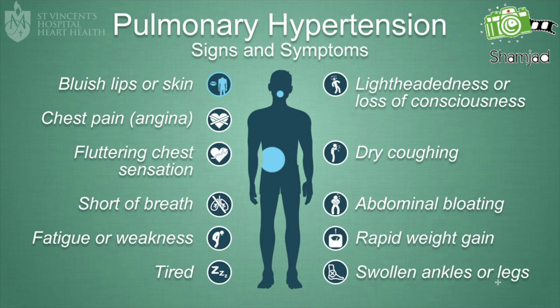Some other signs include exercise-induced nausea and vomiting, ascites, jugular venous distension, hepatomegaly, hemoptysis, hoarseness of voice, prominent S2 sound, cardiac murmur, and cool extremities.